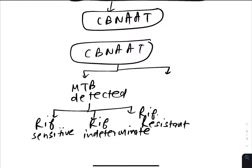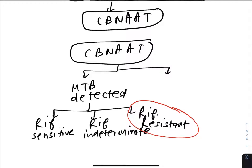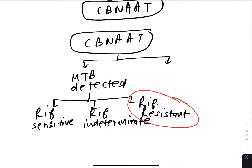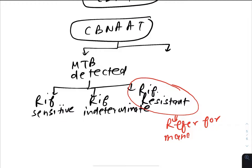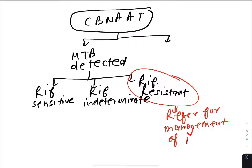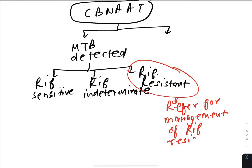If rifampicin resistance is found, it is mostly associated with isoniazid resistance as well, making it MDR-TB. You refer such a patient for management of rifampicin resistance, which means MDR treatment.